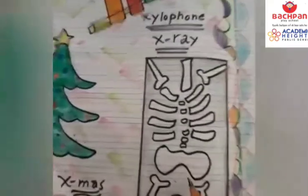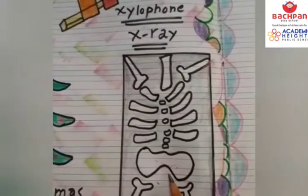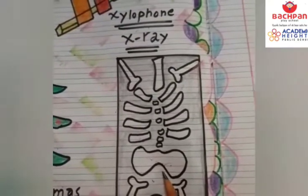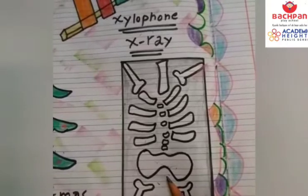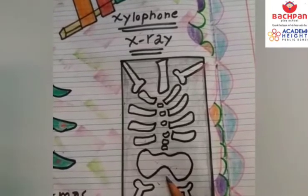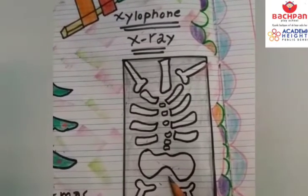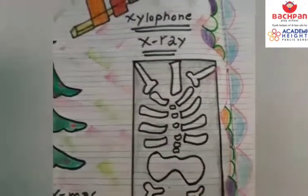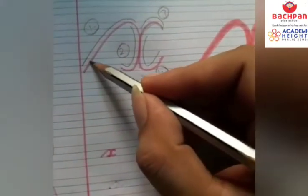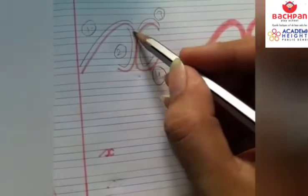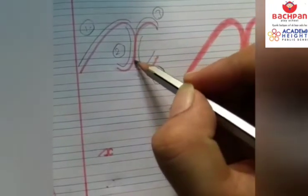X is for X-ray. X-ray is a common imaging test that's been used for decades. Now let's see how to make letter X. Let's start: go up with a slanting line, go down, and curve.